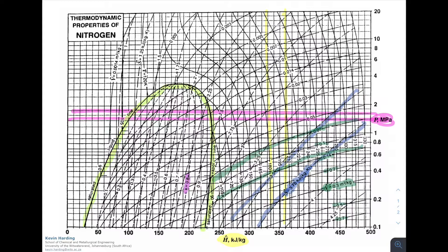Inside the nitrogen diagram bubble, there are quality (fraction of liquid versus vapor) lines shown as dotted lines at values x = 0.8 and 0.9. There are also specific volume lines at 0.3, 0.5, and 0.7 cubic meters per kilogram, and temperature lines flowing in a slight S-shape in grey across the diagram.